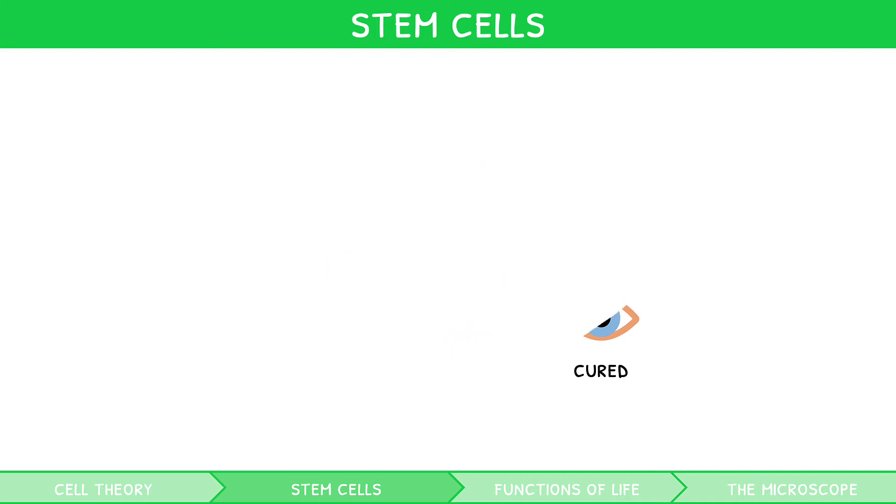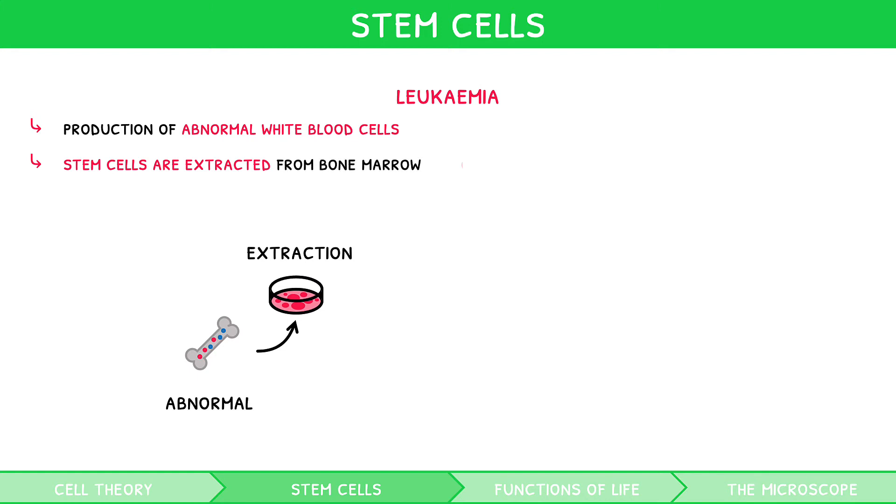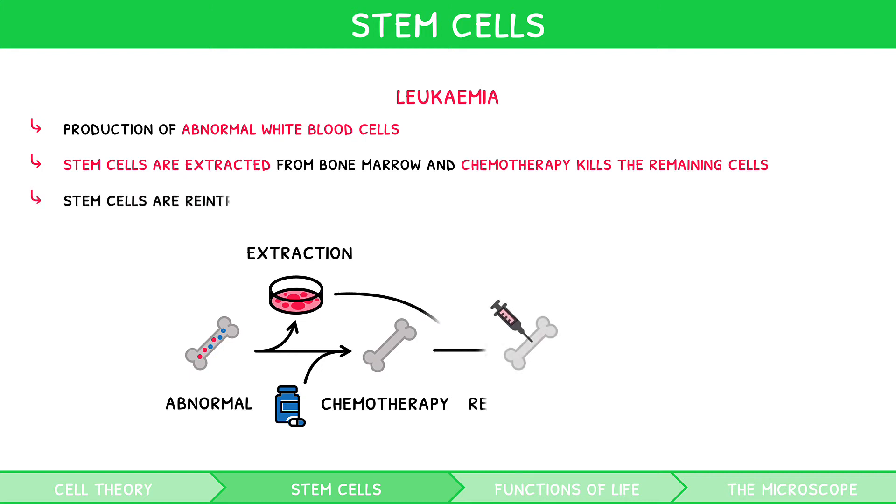The second disease is leukemia. This involves the production of abnormal white blood cells. To cure this, stem cells are extracted from the bone marrow before chemotherapy to kill their remaining white blood cells. The stem cells are then reintroduced to the bone marrow, where they differentiate to form new healthy white blood cells. As you can probably imagine, stem cells are incredibly powerful and will pave the way for a new generation of science.